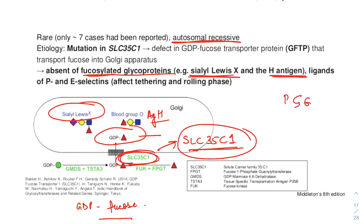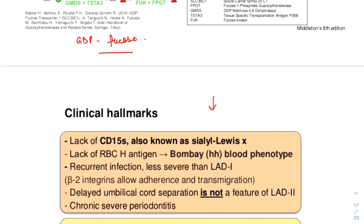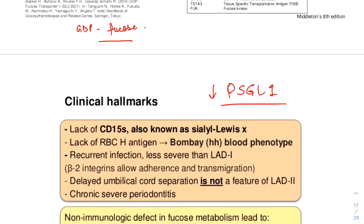PSGL1, that is the P-selectin glycoprotein ligand 1, and its component fucosylated O-linked oligosaccharides, is an important ligand on neutrophils that neutrophils use to attach to the endothelium. Thus, in LAD2, there is a decrease in the production of PSGL1 due to absence of Sialyl-Lewis-X ligand or glycoprotein expression, also called CD15S.